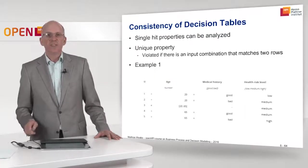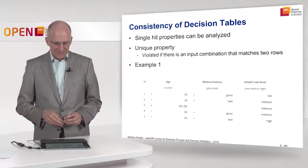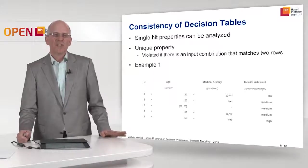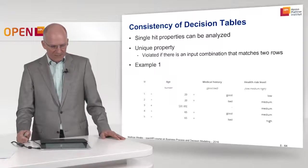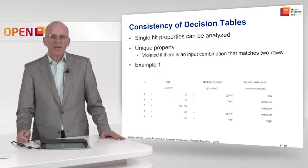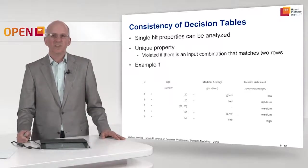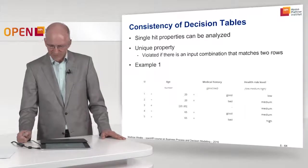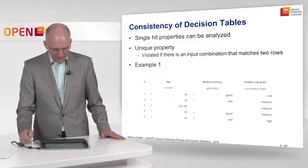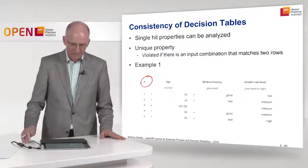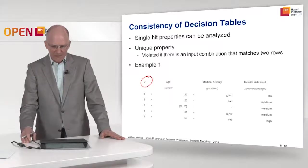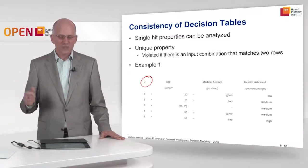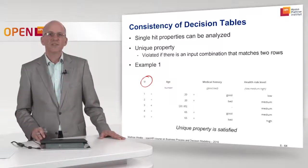Now we look at consistency of decision tables. The single hit properties are analyzed — and as we'll see, only the single hit properties can be analyzed. Let's exemplify this using the unique property. The unique property is violated if there is one input combination that matches several rows. It is sufficient if it matches two rows — then the unique property is no longer valid. Looking at the table, with the unique single hit policy, all input combinations are covered by at most one row, so the unique property is satisfied.